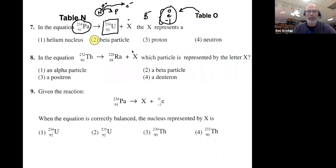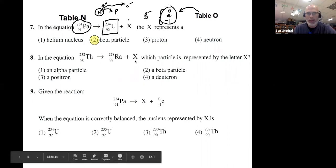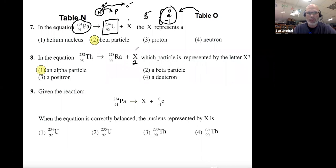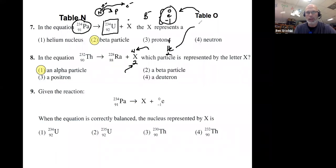Number eight: what is X? Notice 88 plus what equals 90? That's a 2. And what number plus 228 equals 234? That's 4. What particle has an atomic mass of 4 and atomic number of 2? That's a helium nucleus — what we call an alpha particle. If you go to Table O, it's listed like that, and that's why choice one is the answer.